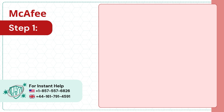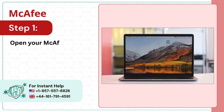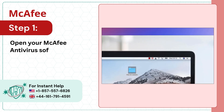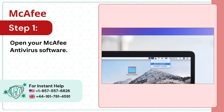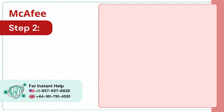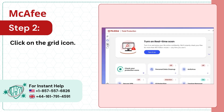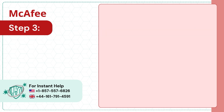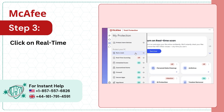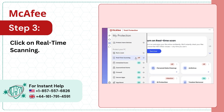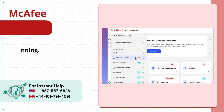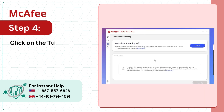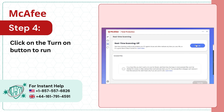Step 1: Open your McAfee antivirus software. Step 2: Click on the grid icon. Step 3: Click on real-time scanning. Step 4: Click on the turn on button to run a scan.